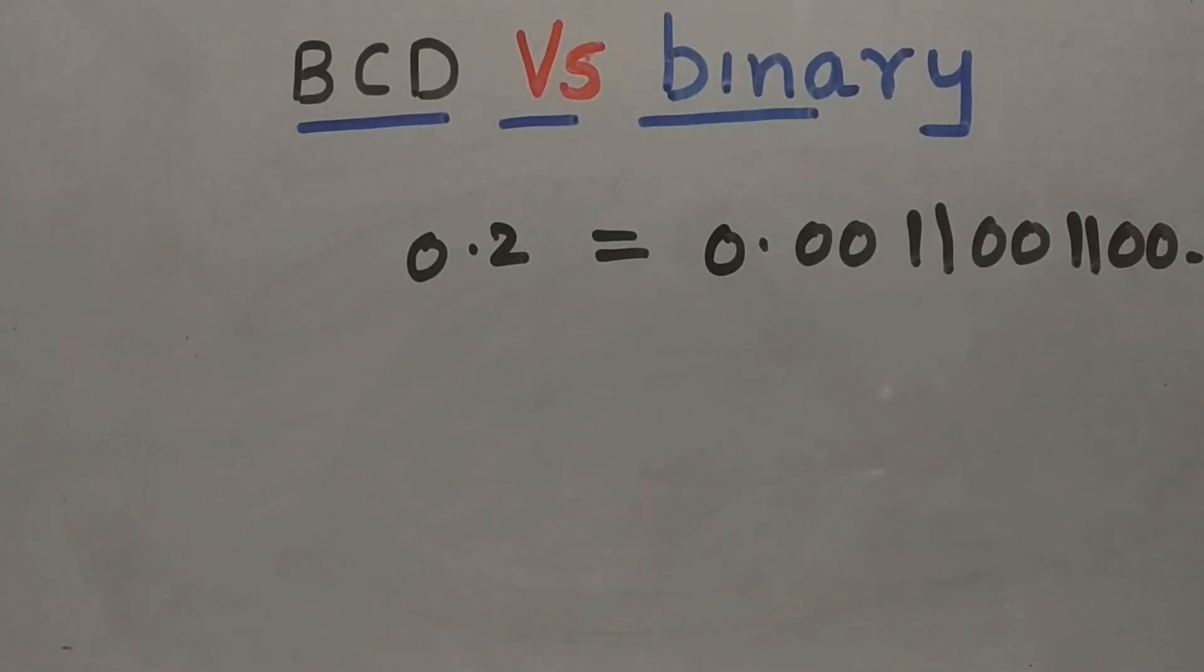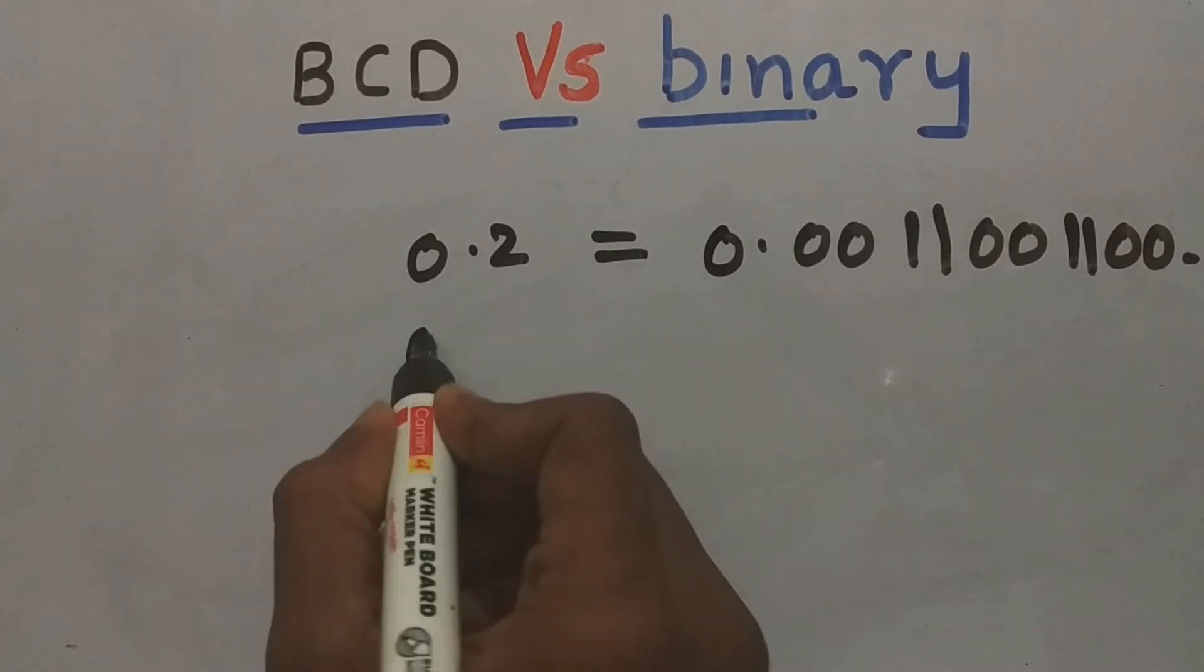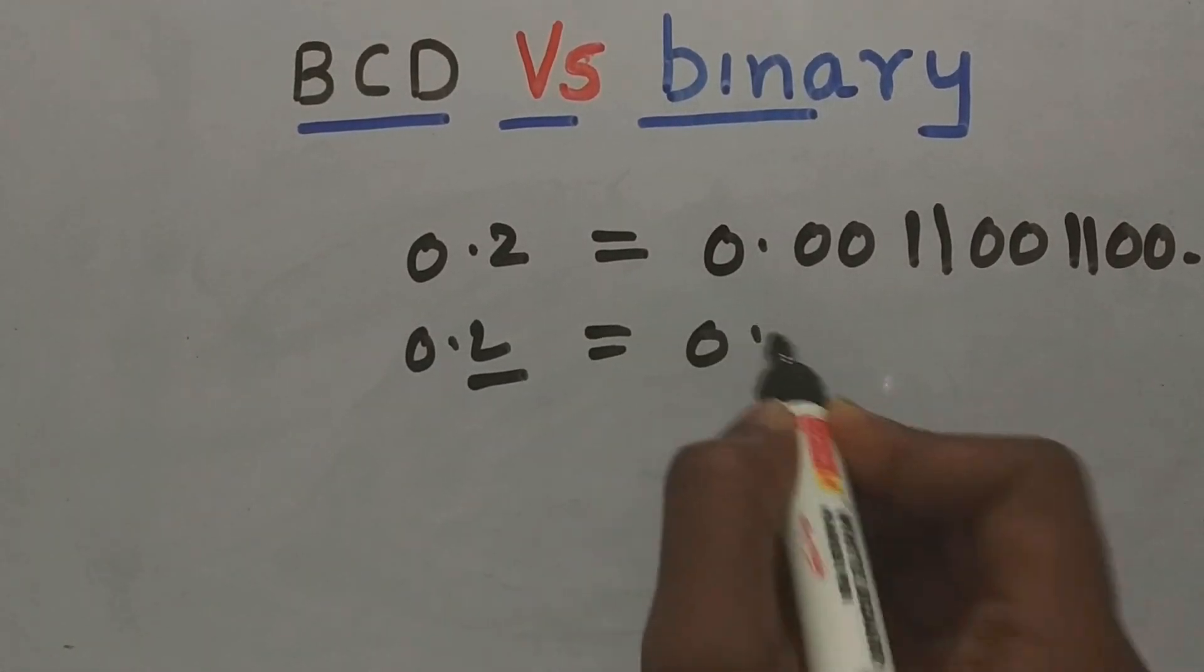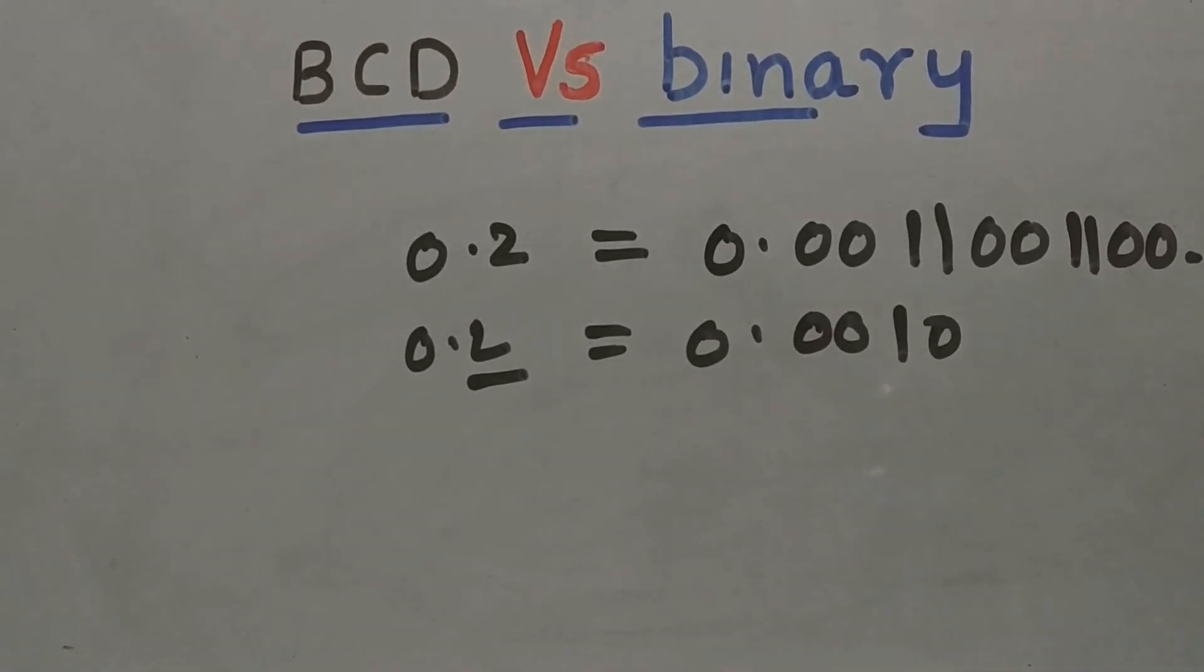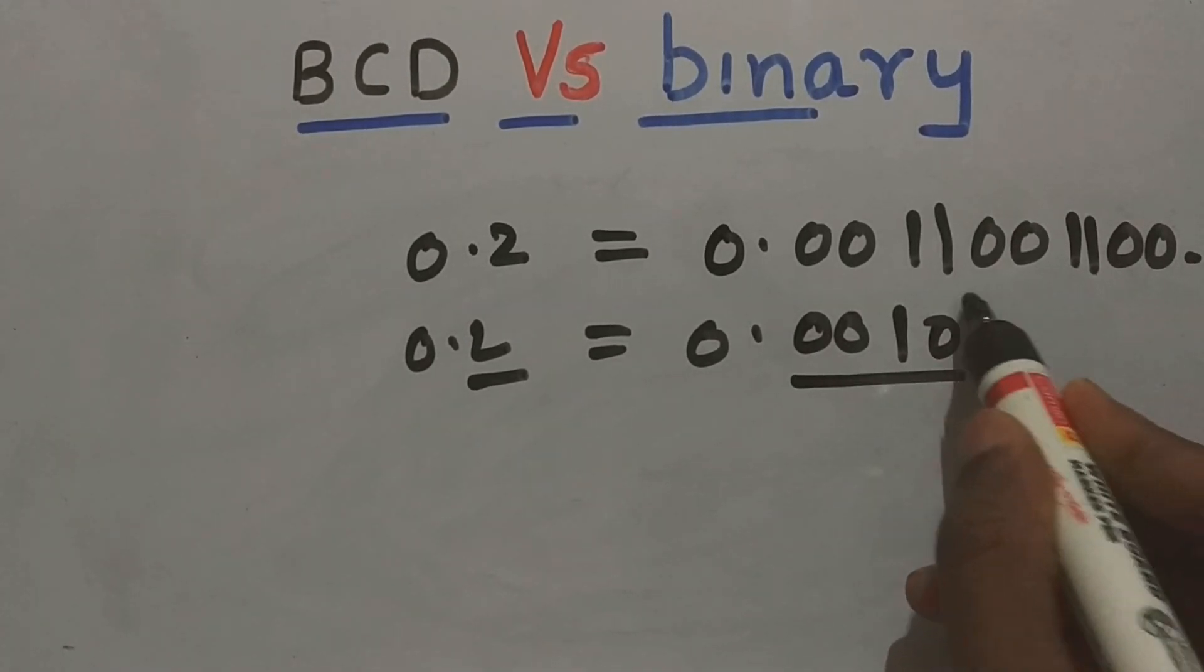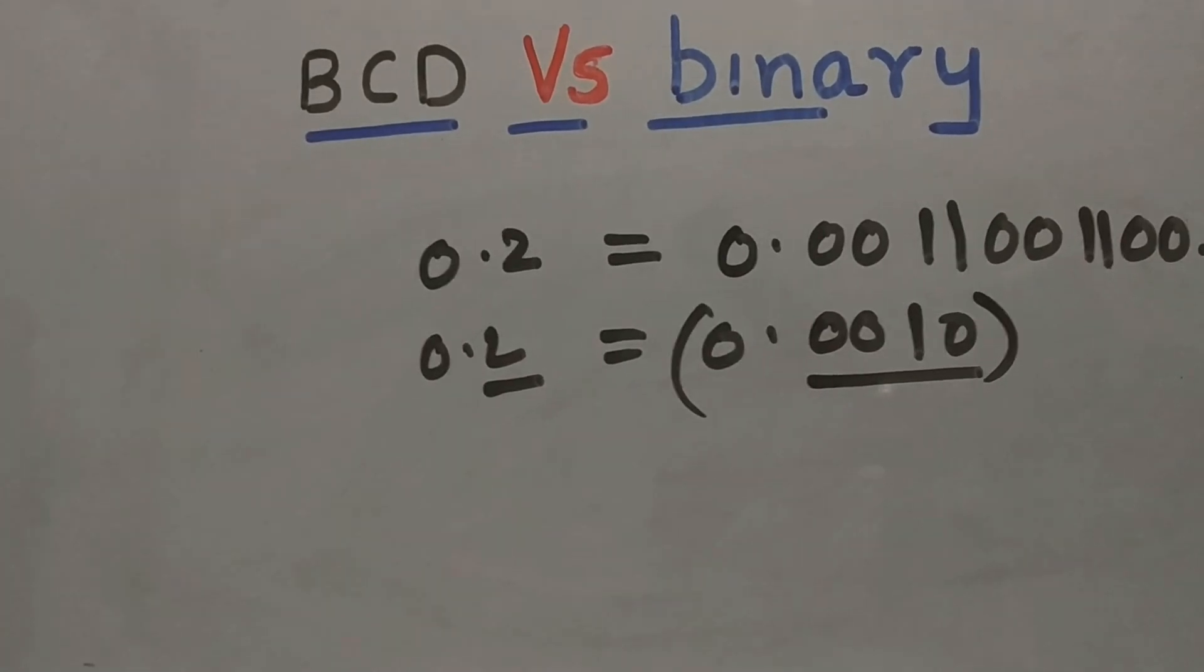Whereas in BCD, what you will do is 0.2. 2, what's the code value? It's 0010. So that's it. See, we have reduced the rounding. That's the importance of BCD.